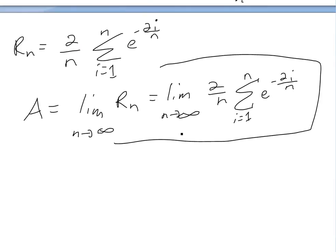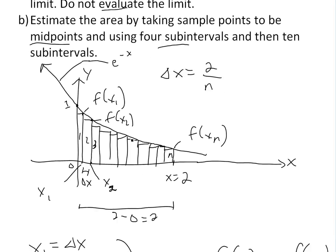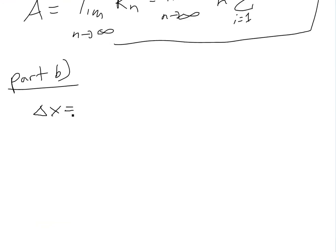Now for part B, it says estimate the area by taking sample points to be the midpoints — not the right-hand points. Using 4 subintervals and then 10 subintervals. So instead of picking the right endpoints, we would pick something in between. We'll call this x_i star. So x_i star is going to be in between, and the f(x) value is just going to be whatever that star is — so we're going to have f(x_i star) for the center.